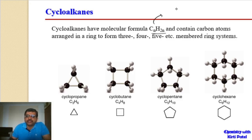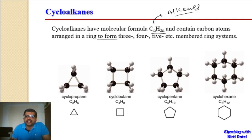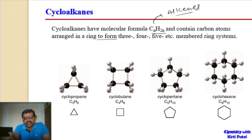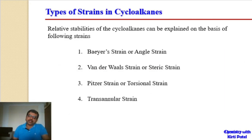The formula CnH2n is very similar to alkenes, whose general formula is also CnH2n. For all monocyclic compounds — that is, compounds with one cycle — the formula is also CnH2n. Cycloalkanes contain carbon atoms arranged in a ring to form three-membered, four-membered, five-membered, and larger rings — for example, cyclopropane, cyclobutane, cyclopentane, and so on.